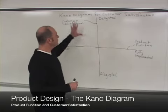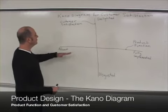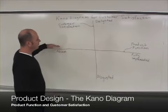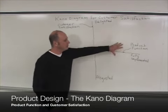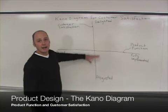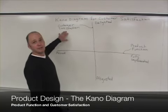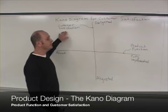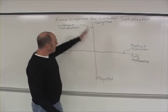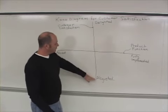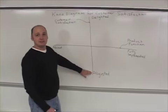This diagram has along the x-axis what we call the product function, and along the y-axis is the degree that the customer is satisfied. Along the y-axis, if you're at the bottom, the customer is disgusted.